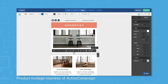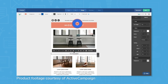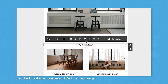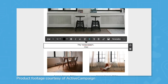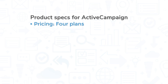ActiveCampaign bills itself as the number one customer experience automation platform. ActiveCampaign aims to consolidate email marketing, marketing automation, and CRM tools all under one system. There are four plans available for ActiveCampaign, with each progressive plan allowing more users and more functionality.